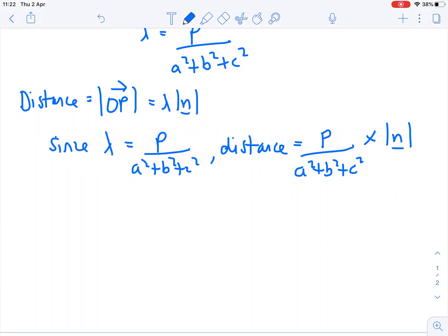Let's have a look at this A squared plus B squared plus C squared. So N is the vector ABC. The magnitude of the normal vector is the square root of A squared plus B squared plus C squared.